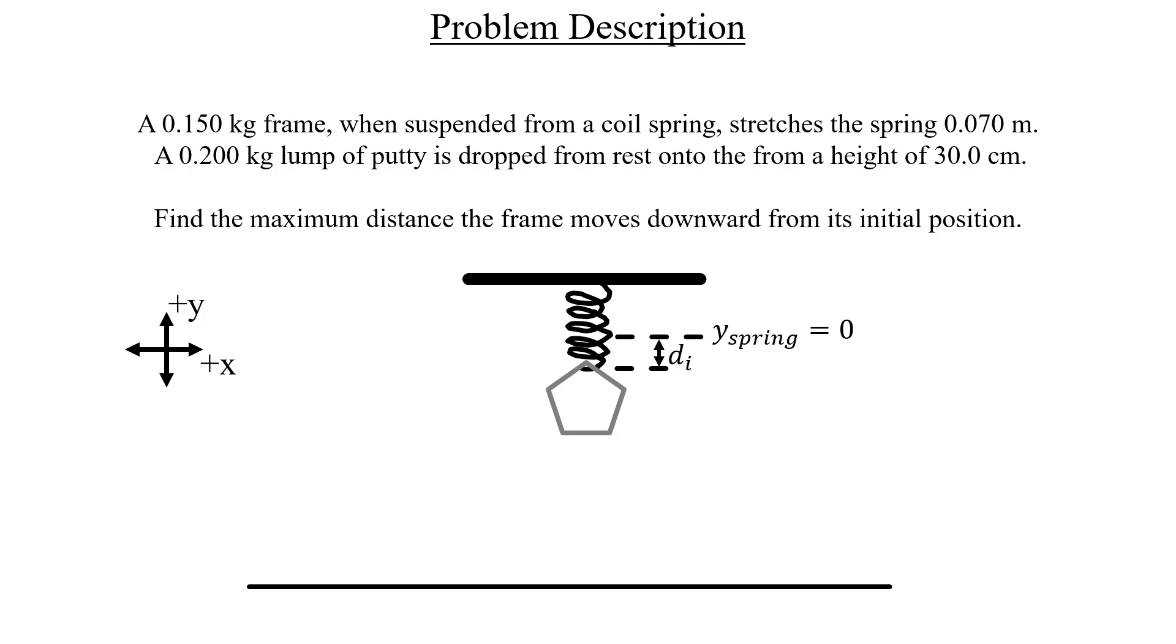Next, we're going to drop a lump of putty onto this frame from a height of 30 centimeters, which will cause everything to move downwards towards the floor. Here's where the tricky part comes in. We can treat the combined objects of the putty and the frame as separate from the spring, and those two will view the floor as y equals zero in their perspective. When they reach that point, the spring will be stretched some additional length beyond d sub i, which we can call d sub f to represent the final stretch distance in that direction.